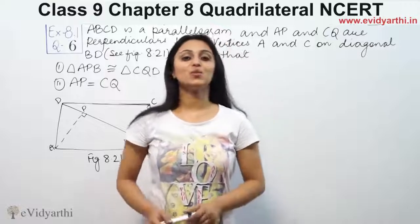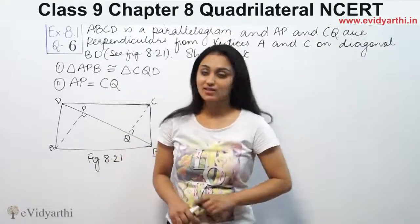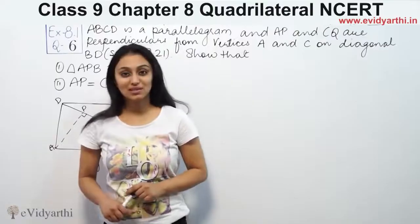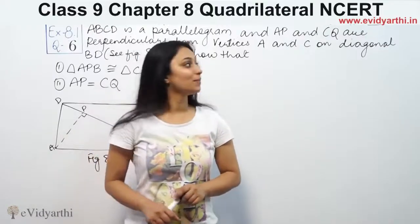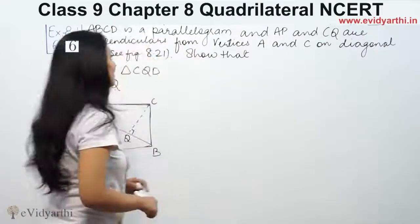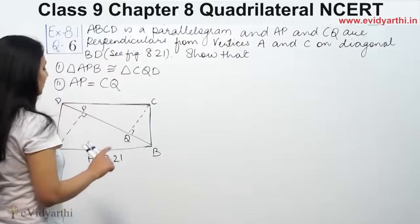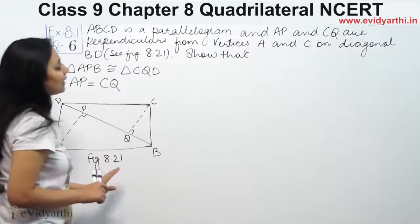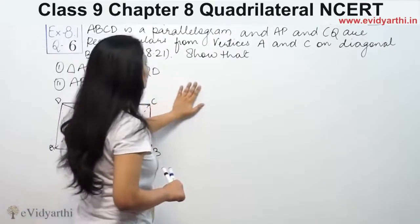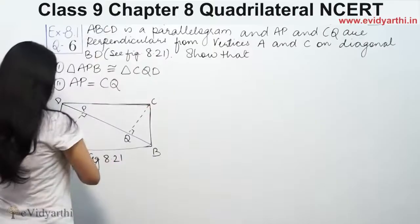Hi, this is Khushbu with another question. This is question number 10 from exercise 8.1, page number 147 from NCERT. ABCD is a parallelogram and AP and CQ are perpendiculars from vertices A and C to diagonal BD.